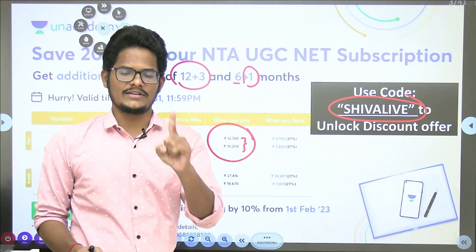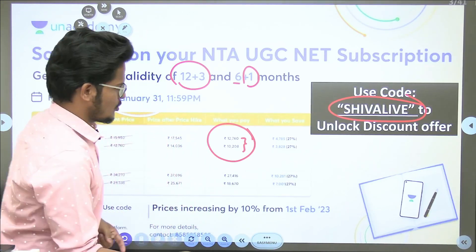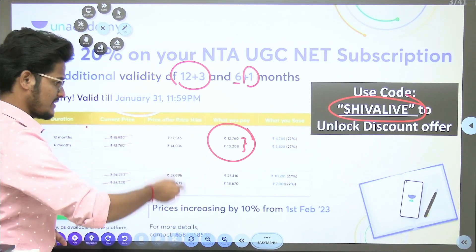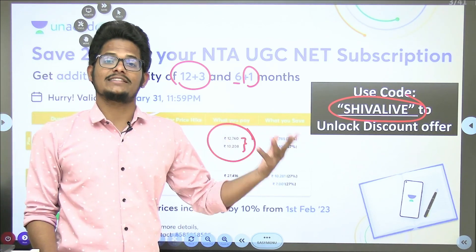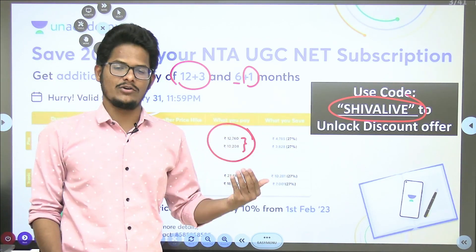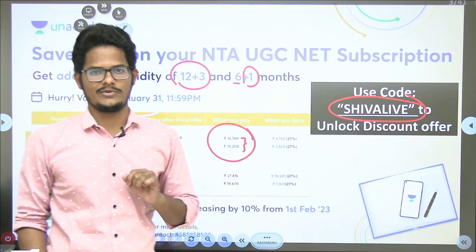If you take before 31st of January, that is tomorrow, you will be getting 20% discount on any Unacademy Plus subscription. From 1st February onwards, there is a 10% price increase. So to avoid that, there is a 20% discount going on now.